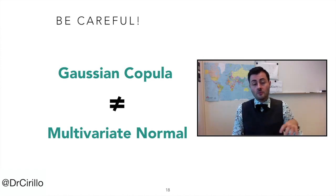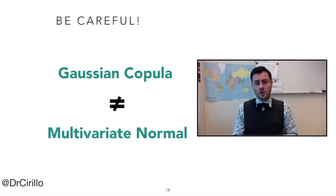Necessarily, if we start from normal marginals and we apply a Gaussian copula, what we obtain is a multivariate normal. But this is a special case.